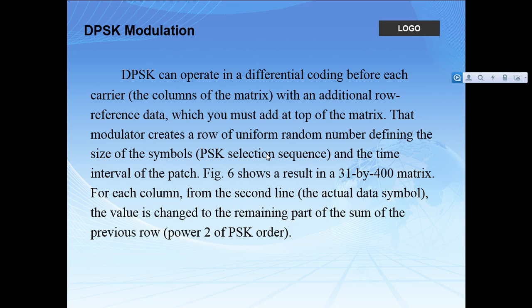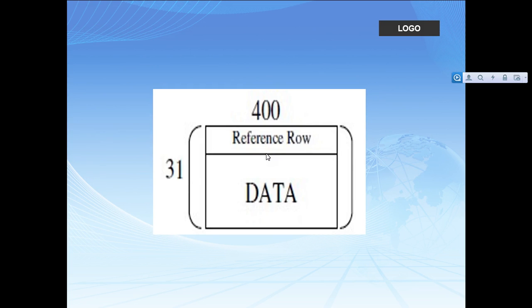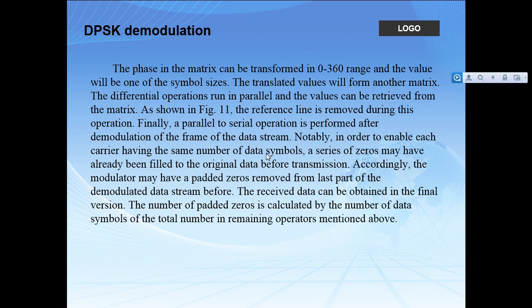Two very important parts of this system are DPSK modulation and DPSK demodulation. DPSK operates using differential coding before each carrier, with an additional reference data row added at the top of the matrix. The modulator creates a row of random numbers defining the size of symbols and time interval. For example, with a 20×31 and 400 matrix, there is a reference data row and the data stream, which is compared with the reference row in the demodulation part.